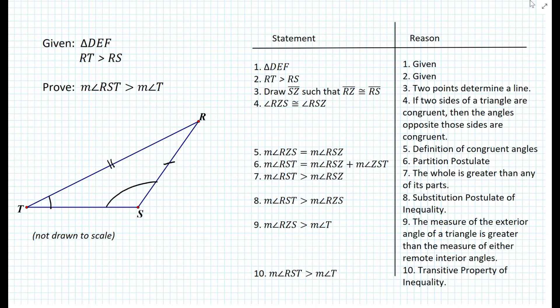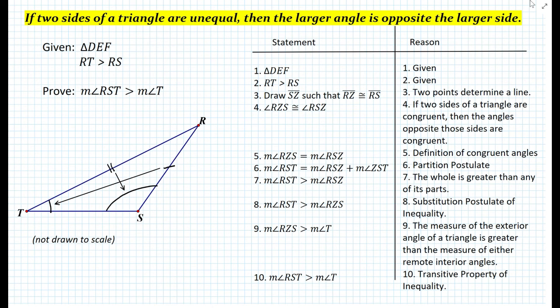According to the given, the measure of segment RT is greater than the measure of segment RS, and we proved that the measure of angle RST is greater than the measure of angle T. These are the opposite angles of those respective sides, in the same order of inequality. So we can now formulate the theorem: if two sides of a triangle are unequal, then the larger angle is opposite the larger side. Since we've proven it, we can use this theorem directly in future statement-reason tables.